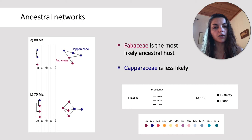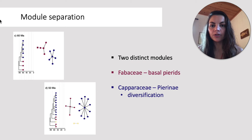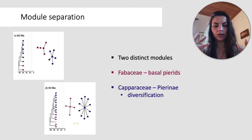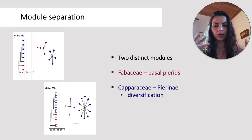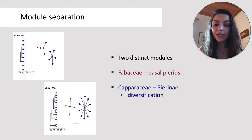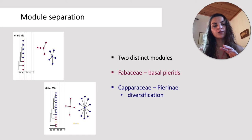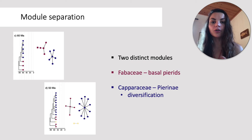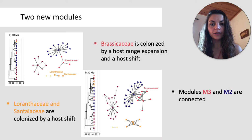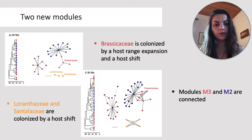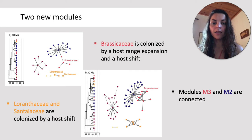In the beginning of Pieridae diversification, Fabaceae was the most likely host, followed by Capparaceae. At 60 million years ago, the two modules — the Fabaceae and Capparaceae modules — are clearly separated: one formed by Fabaceae and basal Pierids, and the other formed by Capparaceae and the Pierinae, which had just started diversifying. By comparing networks at 60 and 50 million years ago, we can see that the Pierinae diversified, increasing the size of the blue module.